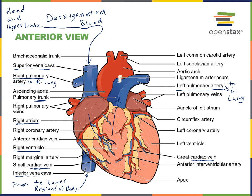Inside the lungs there are small blood vessels known as the pulmonary capillaries where gas exchange occurs. Oxygen will diffuse into the blood at the pulmonary capillaries, and then the blood from the pulmonary capillaries becomes oxygenated blood. We commonly illustrate deoxygenated blood in blue and oxygenated blood in red, so this oxygenated blood is coming from the lungs.